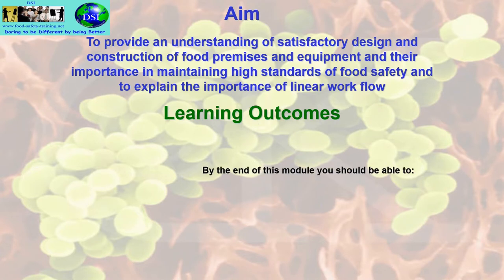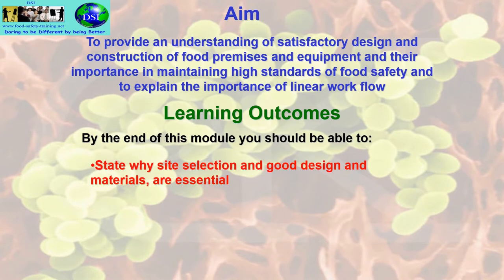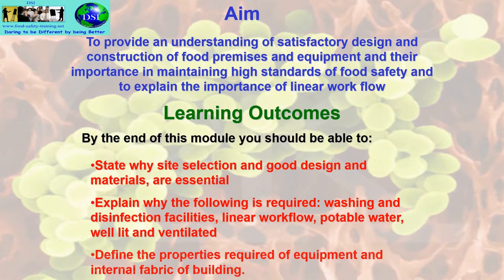The learning outcomes: by the end of this unit you will be able to state why site selection and good design and materials are essential, explain why the following are required — washing and disinfection facilities, linear workflow, potable water, well-lit and ventilated premises — and define the properties required of equipment and the internal fabric of the building.